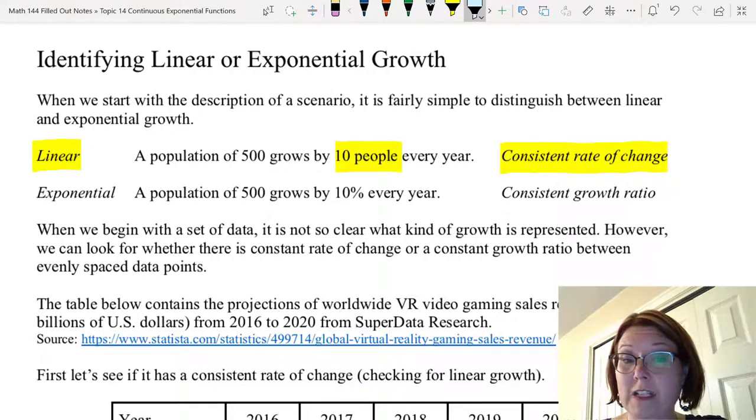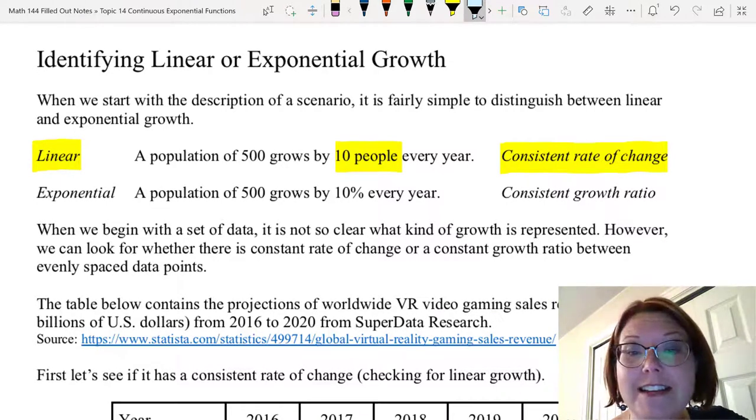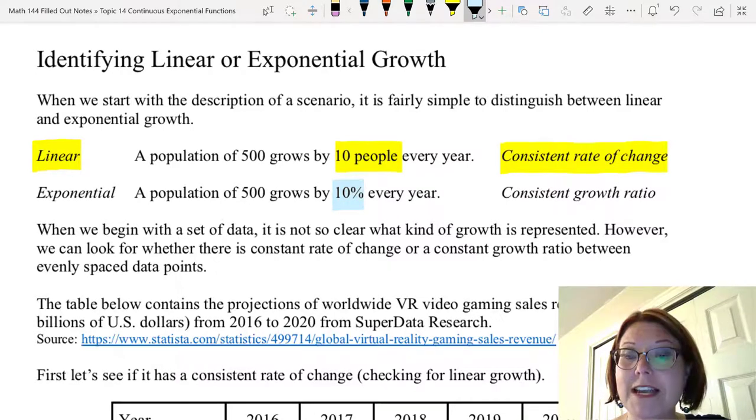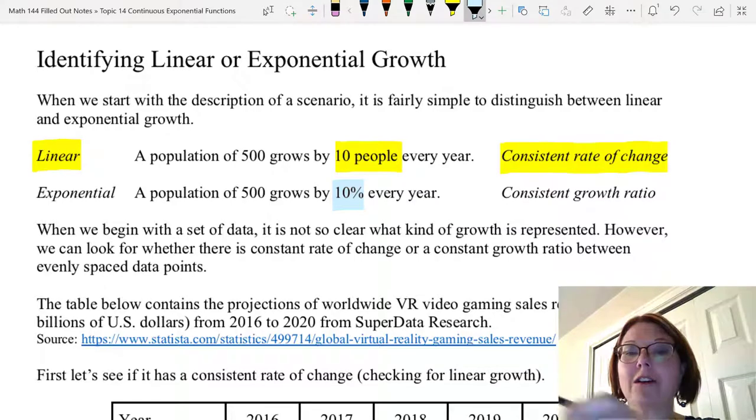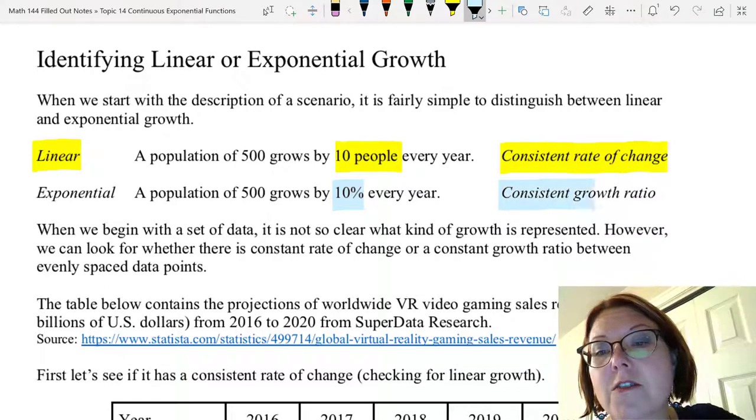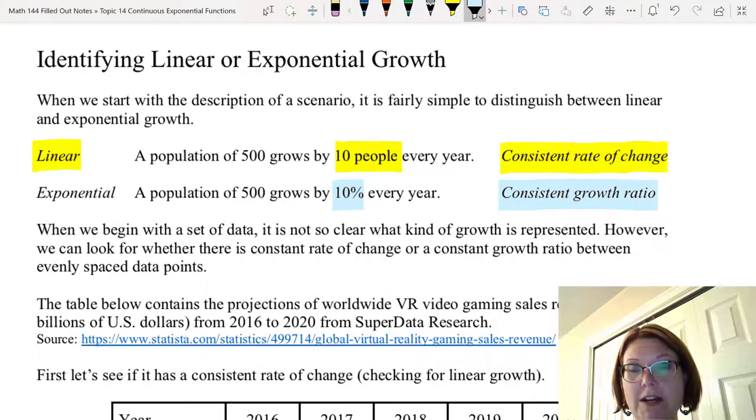The next example is exponential. Listen to the wording. A population of 500 grows by 10 percent every year. That's the key right there, the percent. We're no longer working off a fixed quantity, we're working off a percent of whatever's there every year. And that actually produces a consistent growth ratio. The ratio of every pair of numbers should be consistent instead of the slope being consistent.